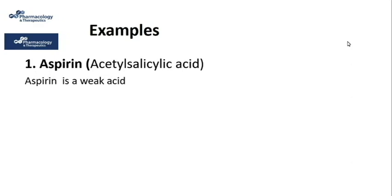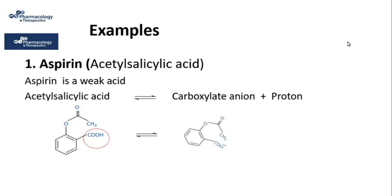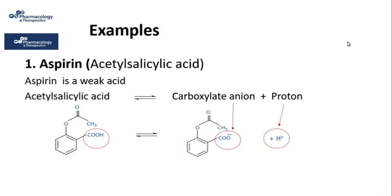Aspirin, chemically known as acetylsalicylic acid, is a weak acid. Its equilibrium dissociation reaction shows acetylsalicylic acid with a carboxylic function dissociating into a carboxylate anion and a proton — it is a proton donor. As mentioned earlier, pKa is determined by the nature of the functional groups involved in dissociation. Here it is the carboxylic function, which has a pKa equal to 3; therefore the pKa of aspirin is 3, which is also recorded in the literature.